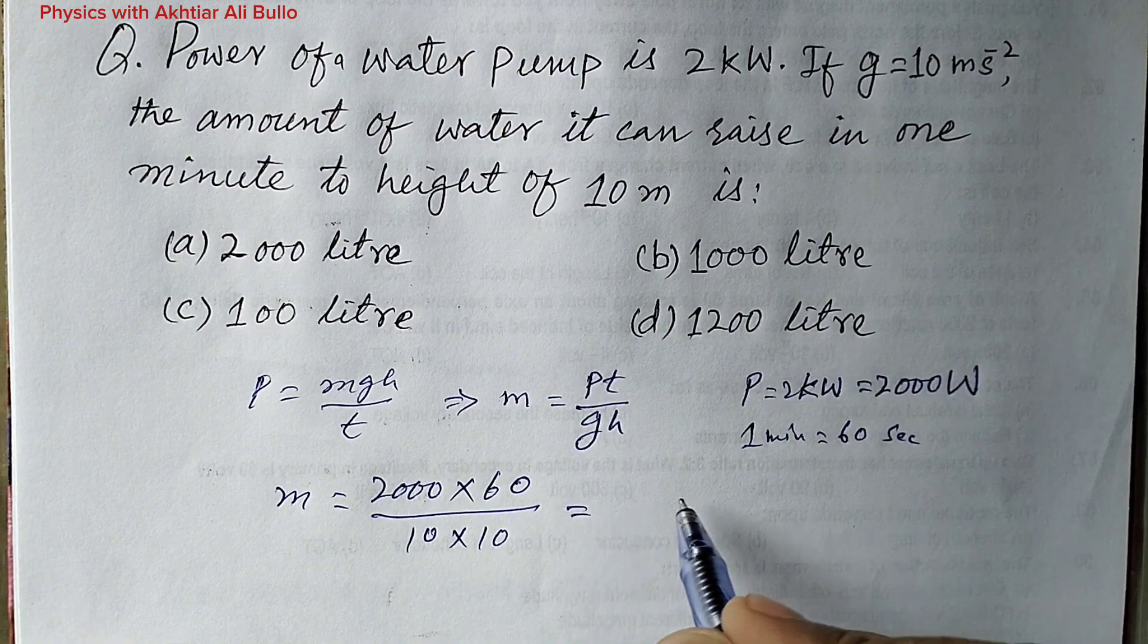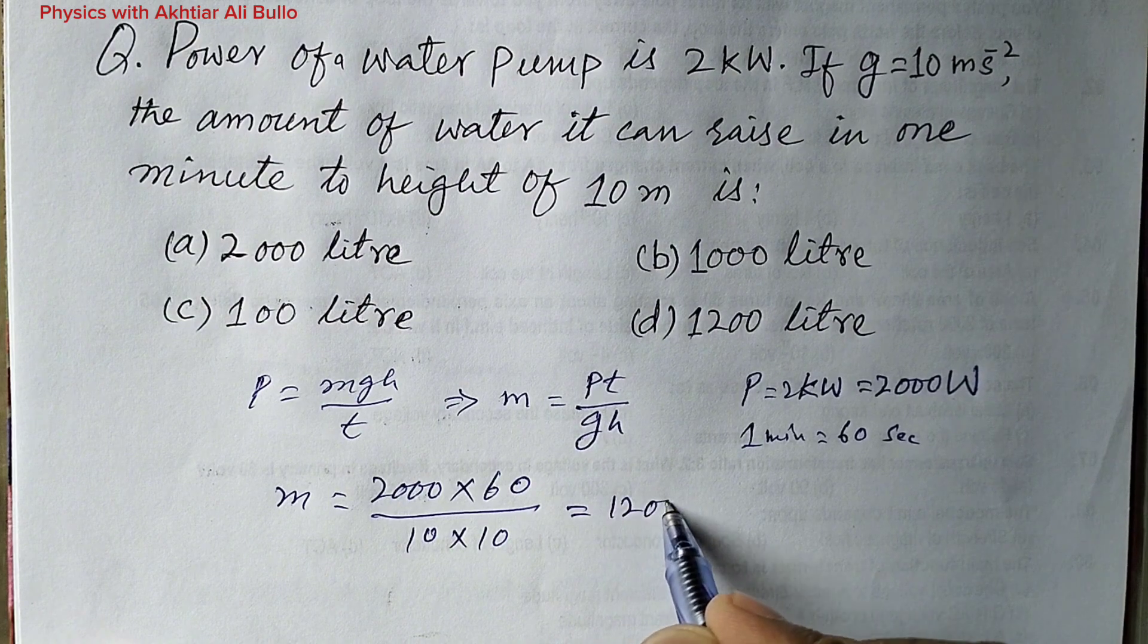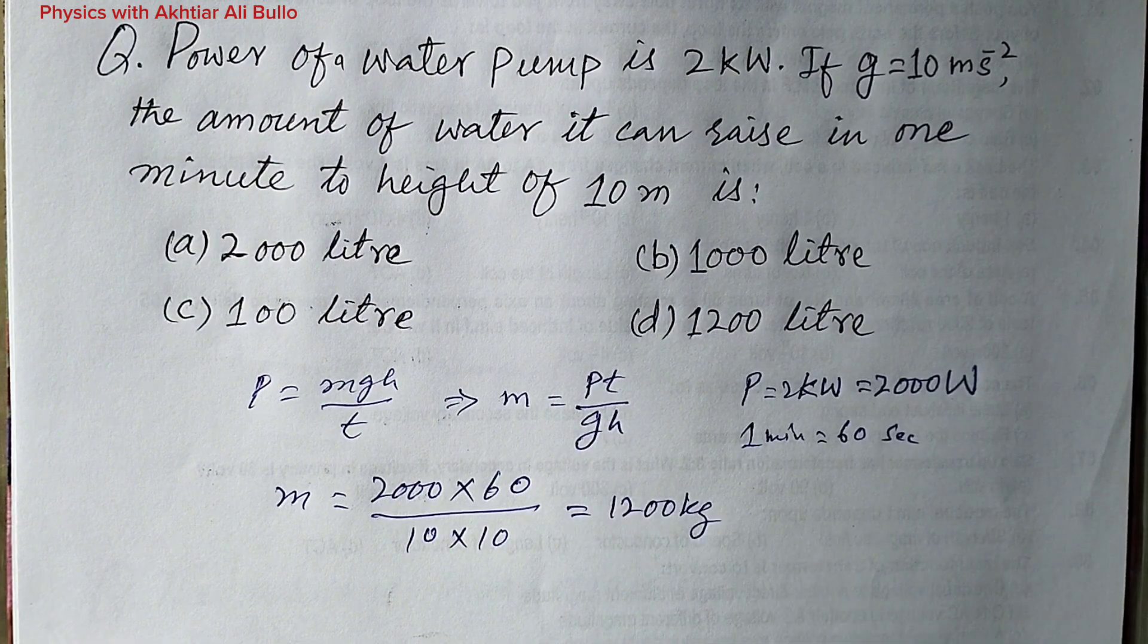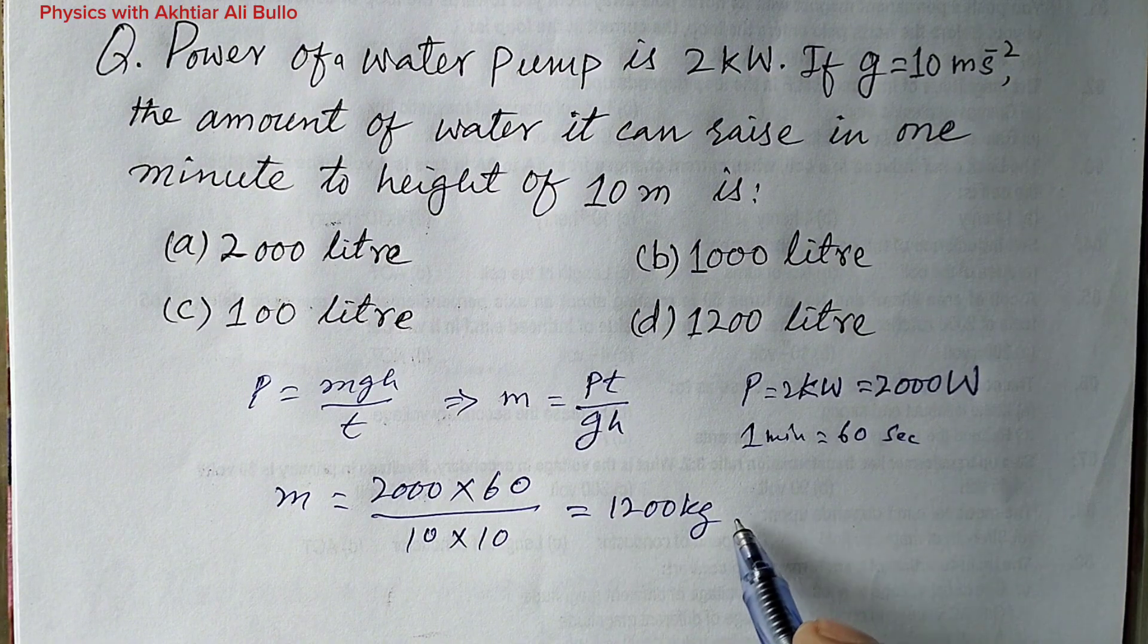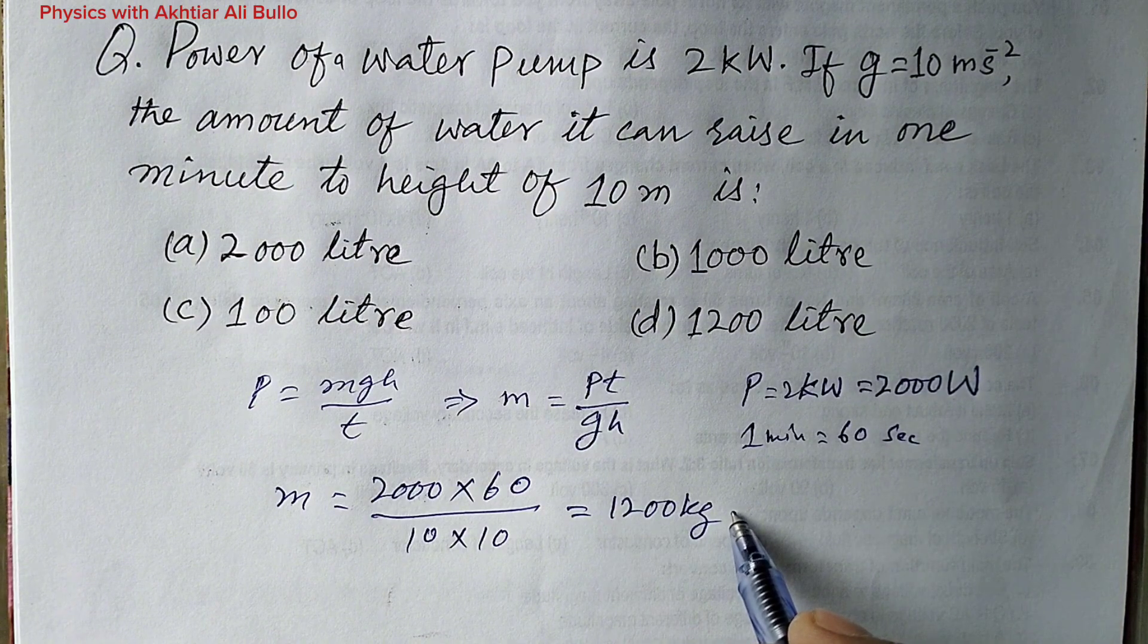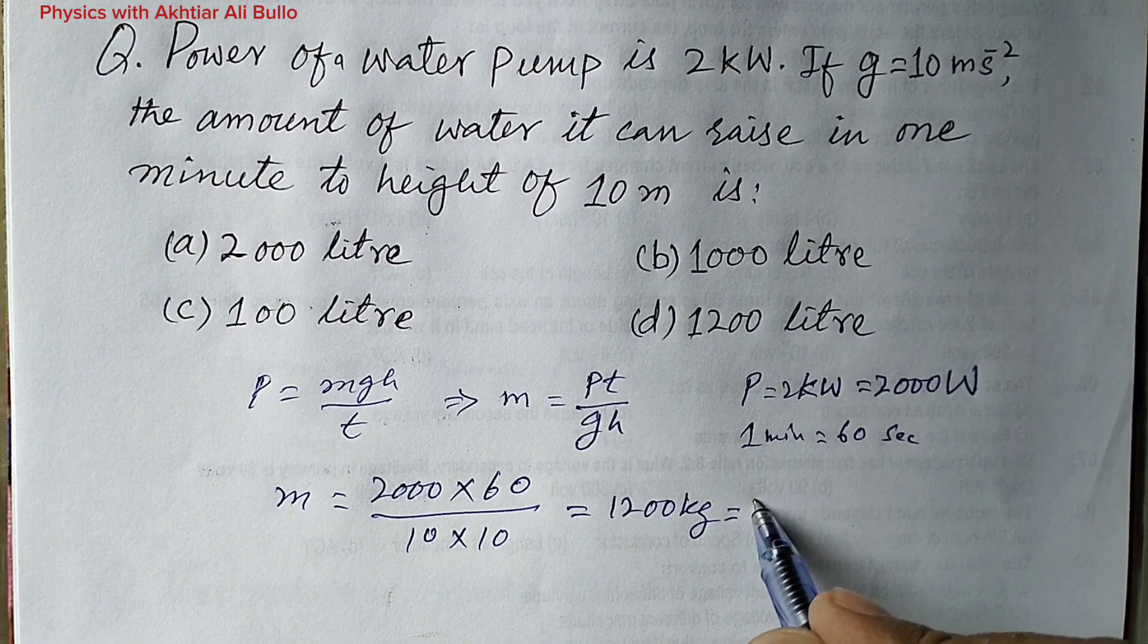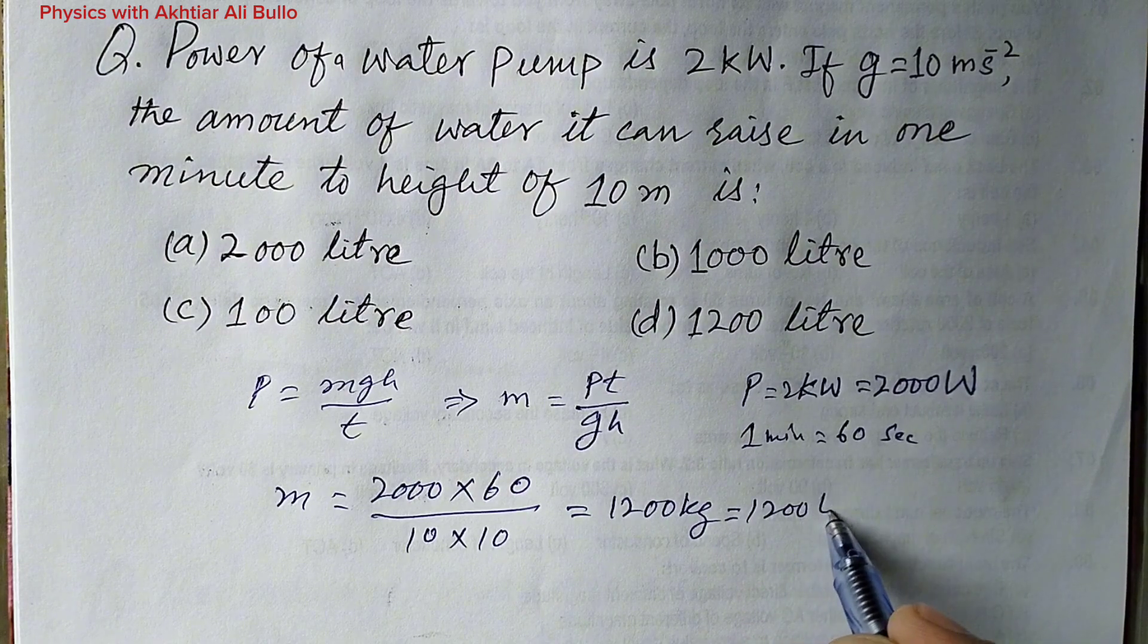After simplification we will get the answer is 1,200 kilogram. The mass of 1,200 kilogram is equal to 1,200 liters.